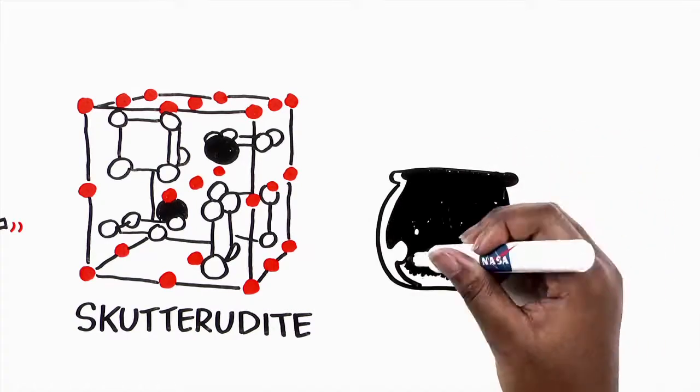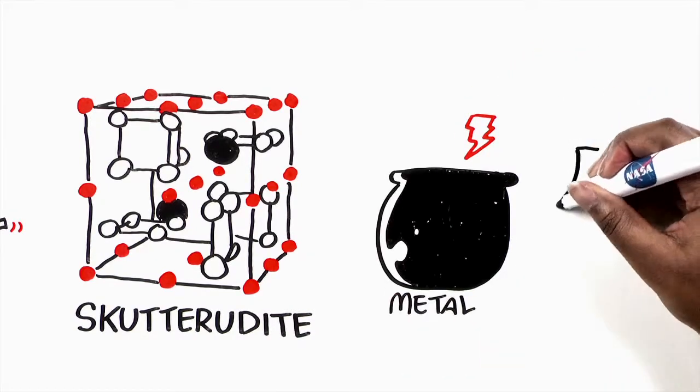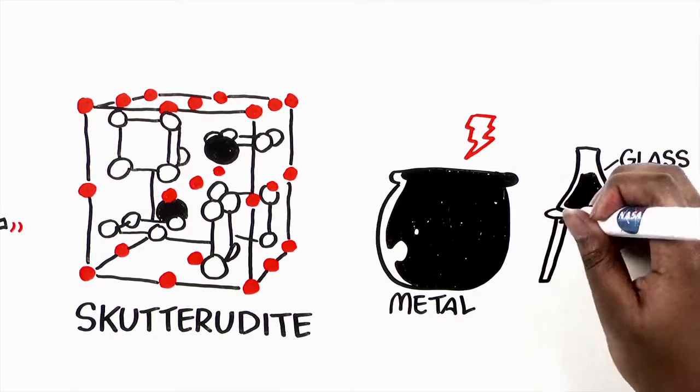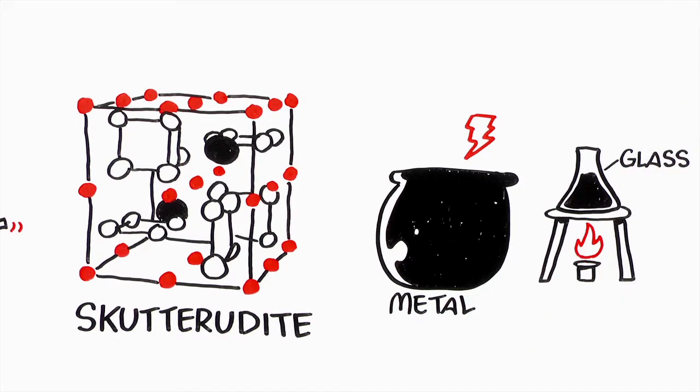Skutterudites conduct electricity like a metal but insulate against heat the way glass does. At the same time, they can generate sizeable electrical voltages, just what engineers need to convert heat into electricity.